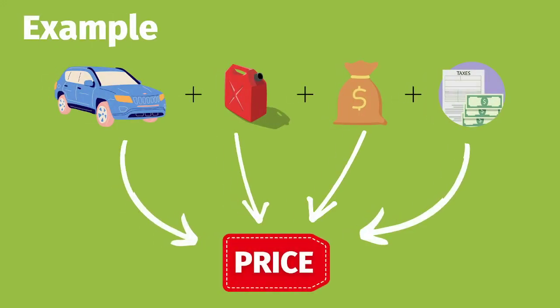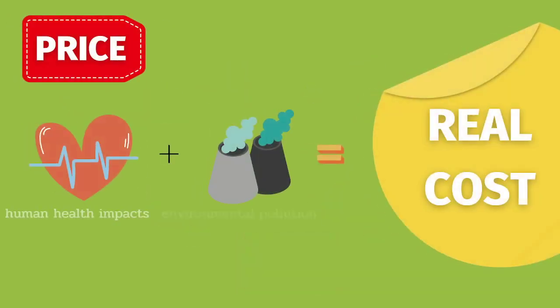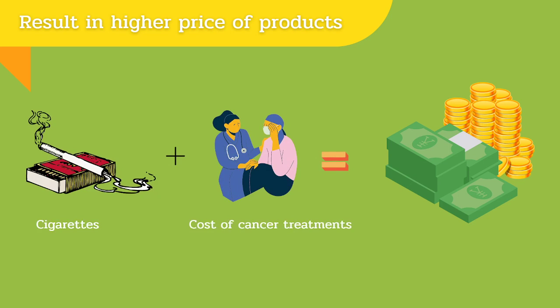For example, when we consider market price for products such as cars and gasoline, we usually calculate all costs that the company has to produce the products — normally including cars, gasoline, added up with market price and taxes. But this does not reflect the costs that result from the usage of the car and gasoline, because the cost of human health impacts and environmental pollution are not included. However, if we add up all these costs, it leads us to what ecological economists call the real cost.